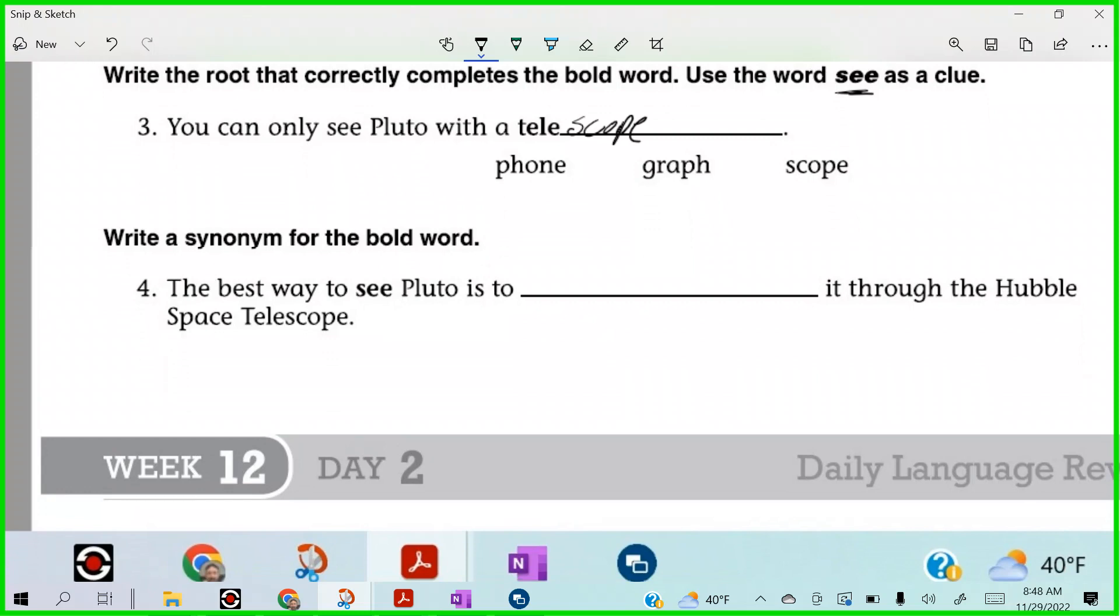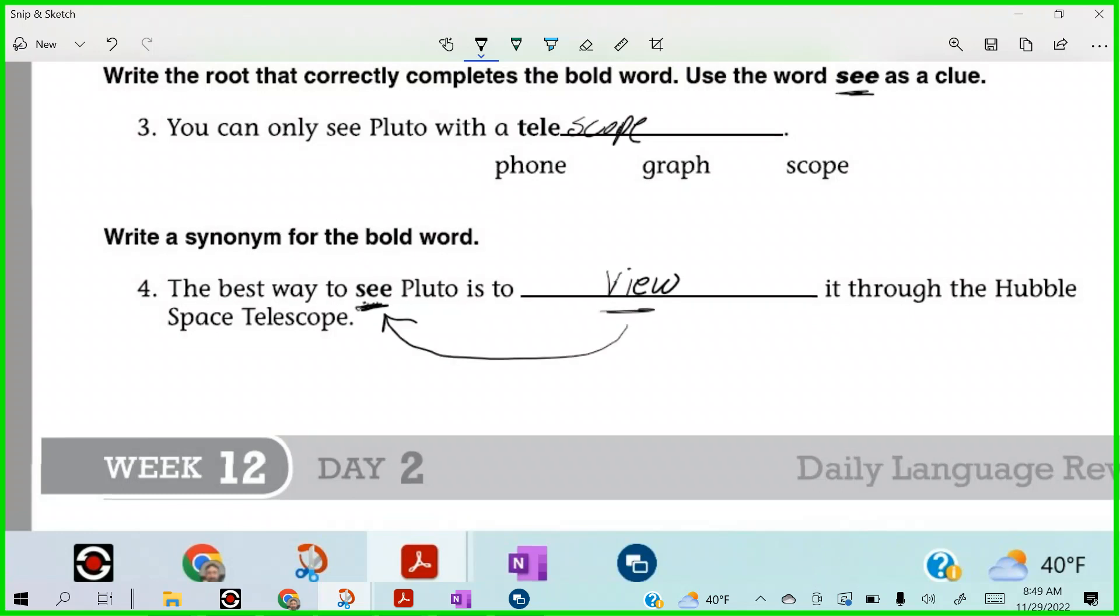The best way to see Pluto is to blank it through the Hubble Space Telescope. What's a synonym? A word that means the same thing as see, but it's a different word. It's a synonym. What do you think? What would be a synonym for the word see? Look. But what would you say would be to look it through the... What's a synonym for see that would fit this sentence? The best way to see Pluto is to blank it through the Hubble Space Telescope. One word, you can get it. Leo. No. Starts with a V. Means the same thing as see. Yes. View. That a boy, Fred. Is to view it through the Hubble Space Telescope. And view is a synonym to see because it means the same thing.